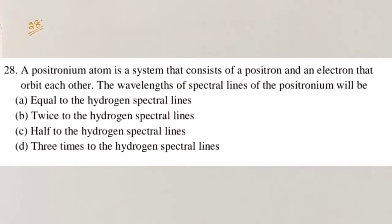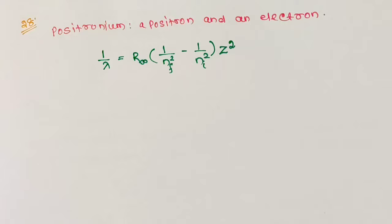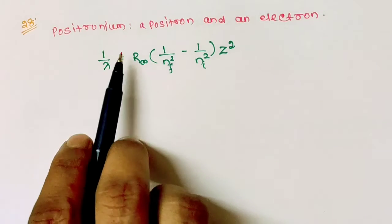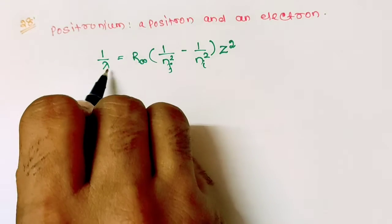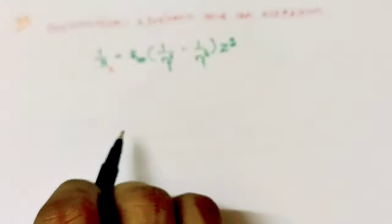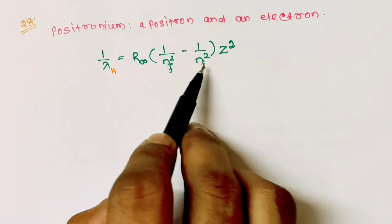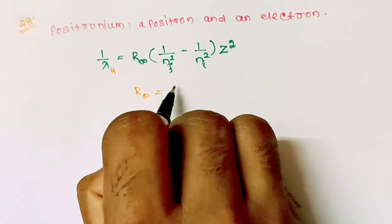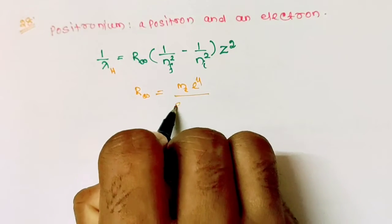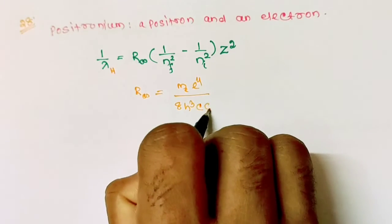Question number 28: A positronium atom is a system consisting of a positron and an electron orbiting each other. The wavelength of spectral lines of the positronium will be what, compared to hydrogen? From Bohr's atomic model, the wavelength of hydrogen spectral lines is given by the Rydberg formula, where R∞ is the Rydberg constant given by m_e·e⁴ / (8h²cε₀²), with value 1.097 × 10⁷ m⁻¹.